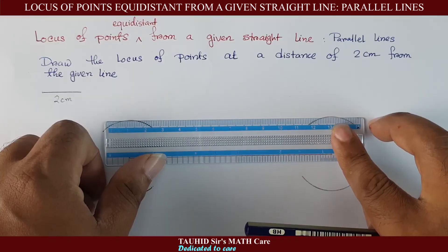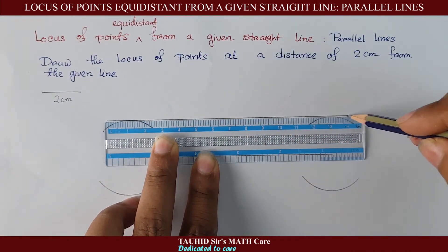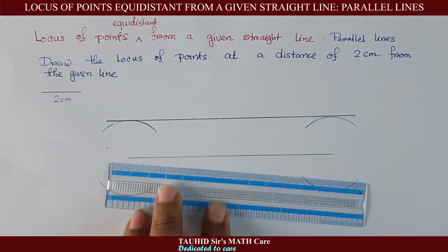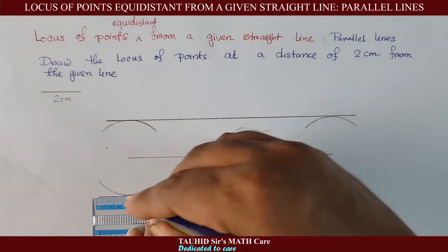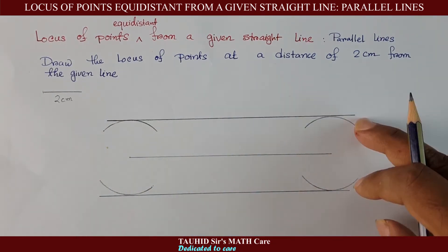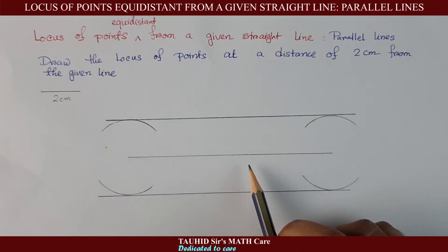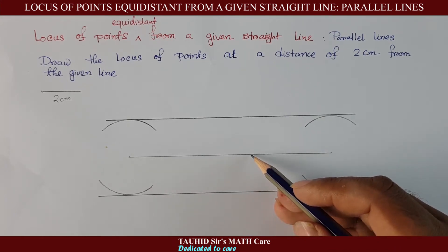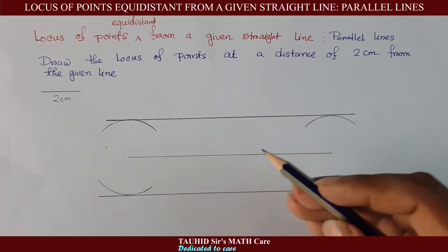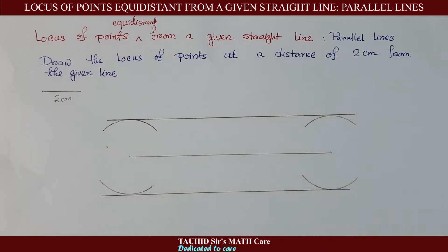Then using a ruler we will draw a straight line touching both arcs above and touching both arcs below. These two straight lines are the locus of the points which are equidistant from the given line. Any point on the upper line is 2 centimeters away from the given line, and any point on the lower line is also 2 centimeters away.